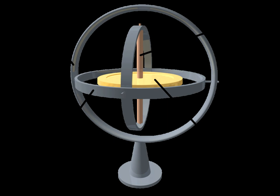A gyroscope, from ancient Greek gyros, circle, and skopeo, to look, is a device used for measuring or maintaining orientation and angular velocity.